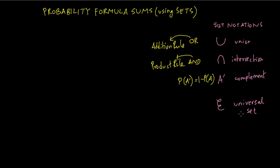The universal set means the entire set, the entire collection. A set is a collection. For example, a set of numbers: 1, 2, 3, 4, 5, 6. Another set could be multiples of 3: 3, 6, 9, and so on. We need to place these sets somewhere — that is called the universal set. If one set is natural numbers 1 through 6, and another is multiples of 3 such as 3, 6, 9, 12, the universal set would be integers or numbers in general.